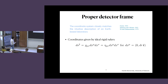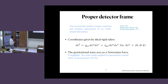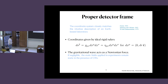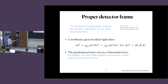In that coordinate system, the coordinates are given by ideal rigid rulers. The metric along the axis of this reference frame looks like Minkowski. In this particular frame, the effect of the gravitational wave on any test mass is a Newtonian force. That's why it's very intuitive — you can think of it just like a laboratory experiment where the gravitational wave creates effects described by Newtonian physics.